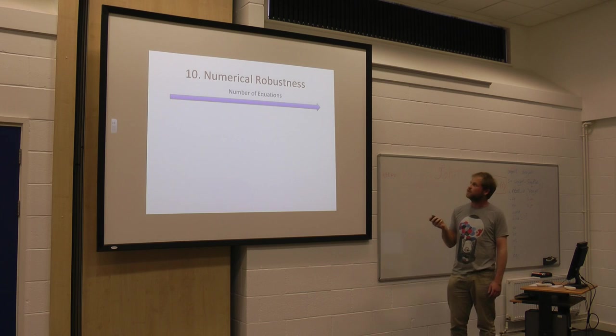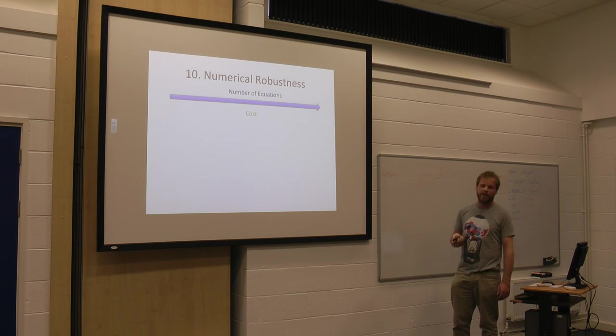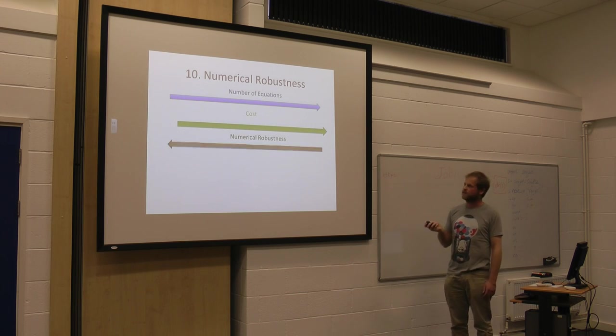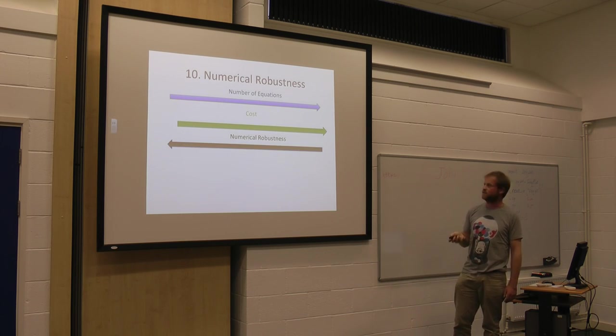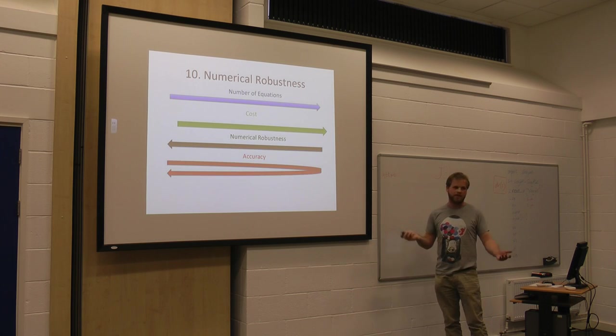Numerical robustness. Number of equations goes that way. How do you reckon the cost goes? That way too. Numerical robustness? The other way. If it's V2F, it's going to fail. Accuracy? Who knows?